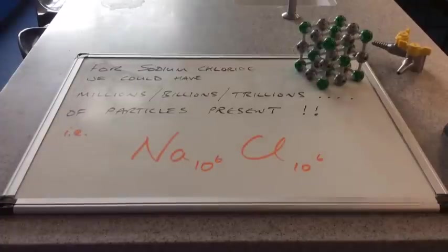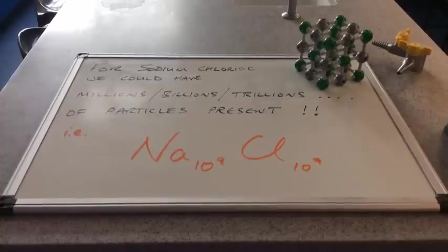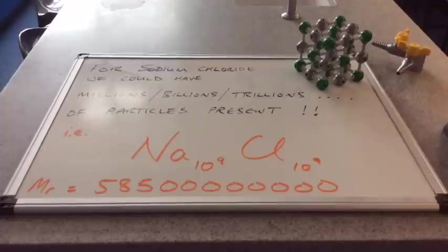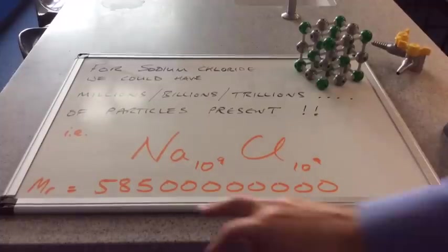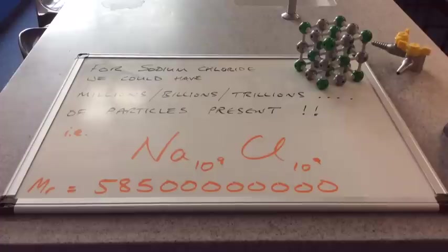So in other words, the formula of sodium chloride, if there were a million sodium ions and a million chloride ions, it would be Na 10 to the 6, Cl 10 to the 6. If it was grown to a bigger size and we had a billion of each ion present, the formula would then be Na times 10 to the 9, Cl times 10 to the 9. That would give that crystal of sodium chloride an MR of 585 with 8 zeros after. But we can't do that, can we?